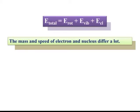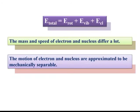The mass and speed of electrons and nuclei differ a lot. The mass of the nucleus is much higher compared to the small-sized electrons. Therefore, electrons, due to their lower mass, can move with higher speed compared to the bulky nucleus. During the time taken by an electron to show a transition from a lower energy state to a higher energy state, we can assume that the nucleus does not change its position — we can assume the nucleus to be fixed. Therefore, the motion of electrons and nuclei are generally approximated to be mechanically separable.